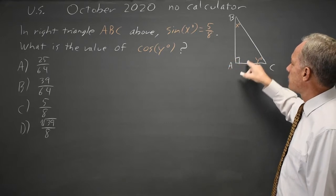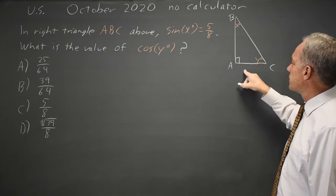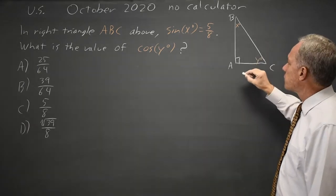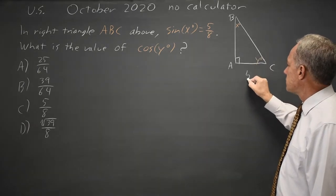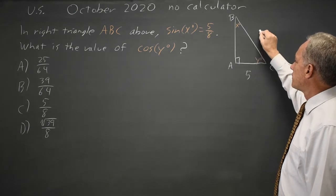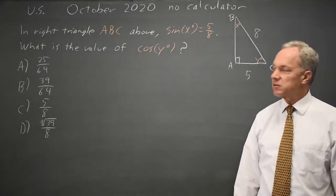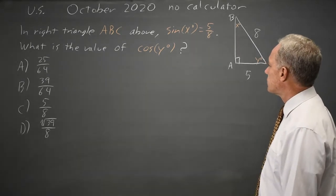The sine is the opposite over the hypotenuse. This side is opposite x. This is the hypotenuse, the side opposite the right angle. So I can choose values where the opposite side is 5 and the hypotenuse is 8. I can choose any values with the ratio 5 over 8, and 5 and 8 are the easiest, of course.